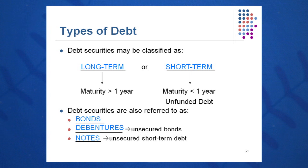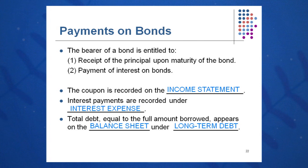Debt securities can be classified as long-term — maturing greater than one year — or short-term, less than one year, sometimes called unfunded debt. Other names for debt securities include bonds, debentures (which are unsecured bonds), and notes (typically short-term debt). If you hold a bond, you're entitled to receipt of principal at maturity plus regular interest payments. From a financial statement viewpoint, the coupon or interest payment appears under interest expense on the income statement, while the total debt issued is shown on the balance sheet under long-term liabilities.